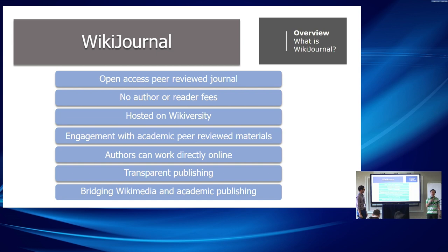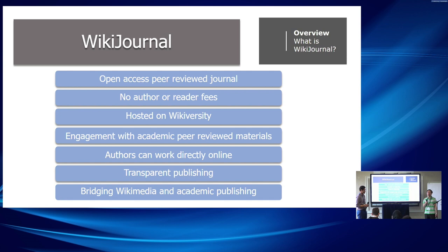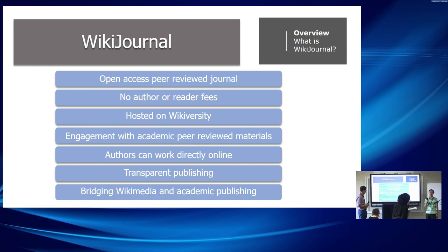We found that we could engage with academic peer review materials online. We have a preprint version and transparent publishing, which means the peer reviewers' identity is known — unless they choose to be anonymous — and their full review history and comments are made public rather than behind closed doors. This is mainly to bridge the Wikimedia and academic publishing gap.